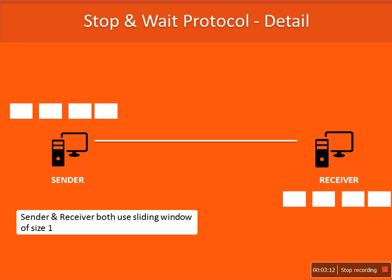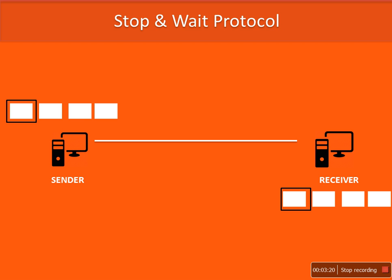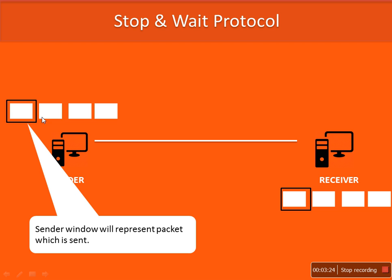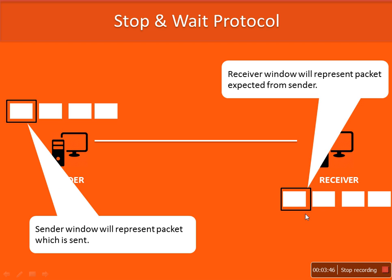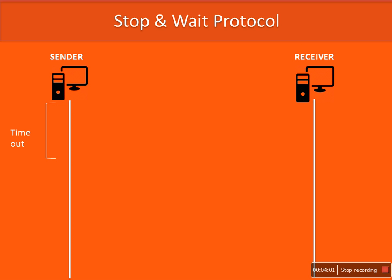In this protocol, the sender and receiver both use a sliding window of size 1. What is the meaning of sliding window? At the sender side, this window can hold only one packet. The current packet residing in this window means that this packet is transmitted and acknowledgement for this packet is waiting. At the receiver side, the window represents the packet that is expected to arrive from the sender side.